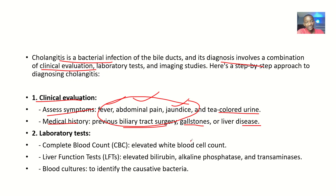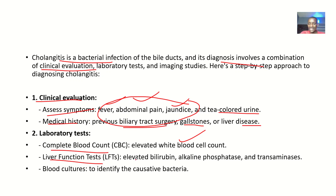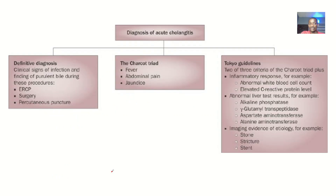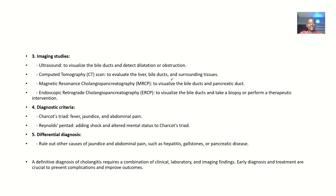For laboratory tests, you opt for a complete blood count (CBC). You may see elevated leukocytes — leukocytosis — with a left shift with immature bands. You can also do liver function tests: in cholangitis, you will see elevated bilirubin, elevated alkaline phosphatase, and elevated transaminases. You can also do blood cultures if you are suspecting a bacterial infection, since some of those bacteria will be in the blood.